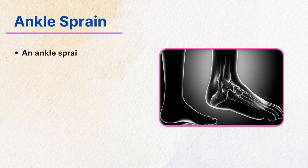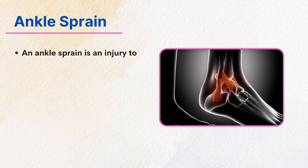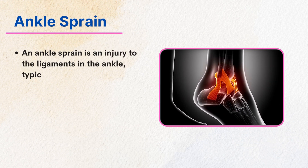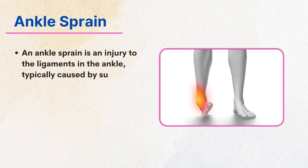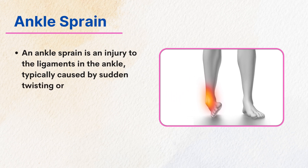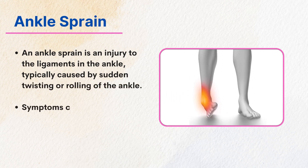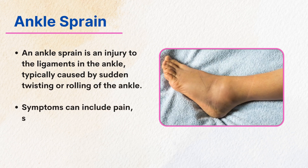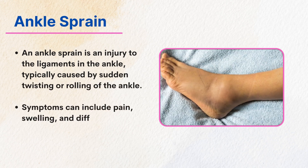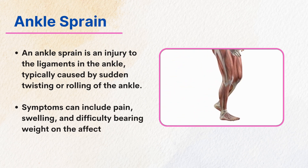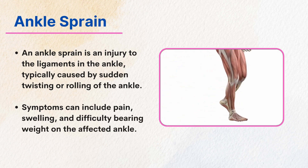An ankle sprain is an injury to the ligaments in the ankle, typically caused by sudden twisting or rolling of the ankle. Symptoms can include pain, swelling, and difficulty bearing weight on the affected ankle.